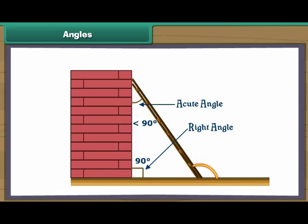Now let us look at the third angle that the ladder makes with the ground. We take the ground as the base. The ladder is not vertical; it is tilted out. Such an angle is called an obtuse angle and its measure is more than 90 degrees.